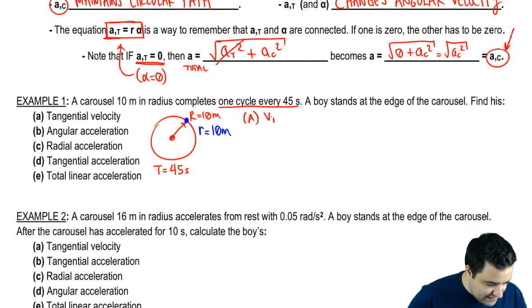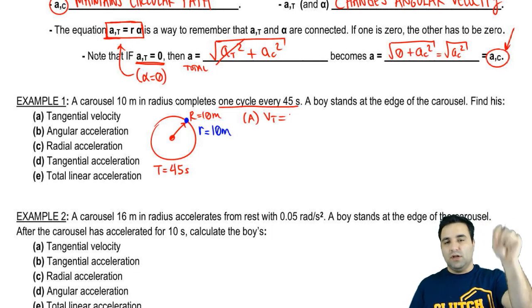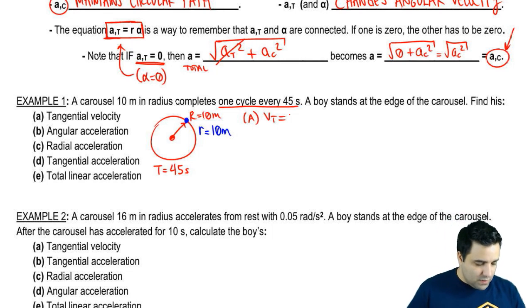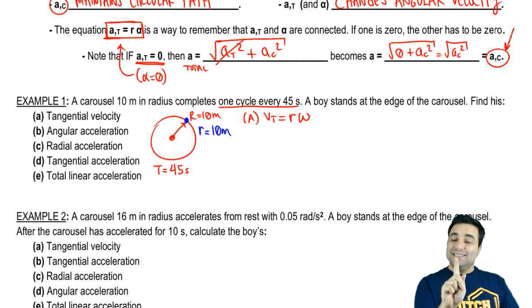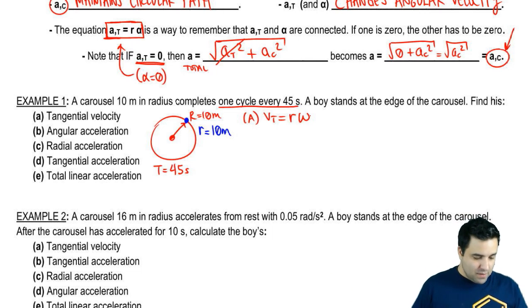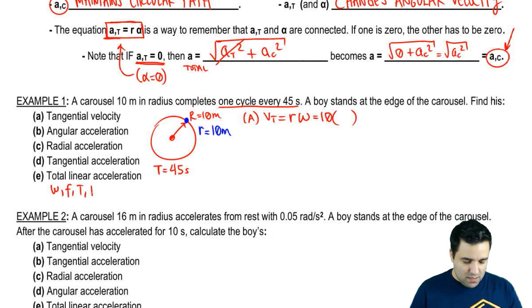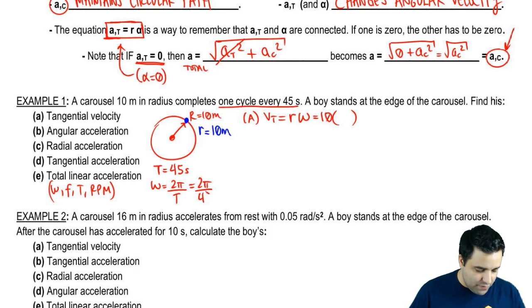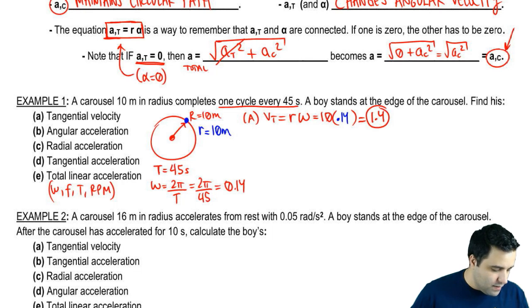So tangential velocity is VT. And remember the tangential velocity of a point, a person, an object, whatever on a circle, on any kind of spinning object is r omega, where omega is the omega of the boy, which is the same as the omega of the disc. So the boy is at a distance 10, but I don't know omega. However, I can get omega from T because omega, frequency, T, and RPM are all interconnected. Omega is 2 pi over T. So 2 pi divided by 45 seconds. And if you do that, you get 0.14. And that's what goes here, 0.14. Therefore, the answer is 1.4 meters per second, the velocity that the boy experiences.